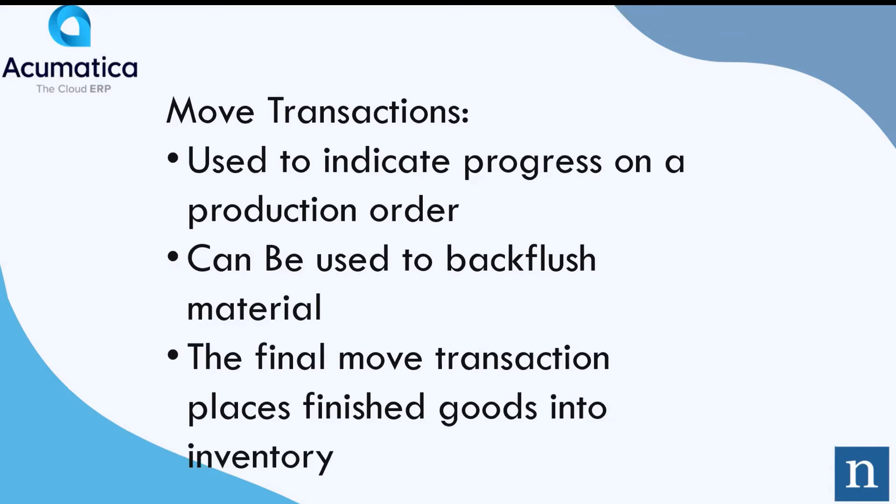Move transactions in Acumatica production orders are used to indicate progress on a production order. A production order must have at least one operation. If there are more than one operation, the process of telling Acumatica's production system that we're done with one operation and moving on to the next is done with a move transaction. Move transactions can do more — if backflushing is enabled on inventory items associated with an operation, the move transaction will also backflush material when it runs. On the final operation of a production order, when a move transaction is performed, finished goods are created and placed into inventory.